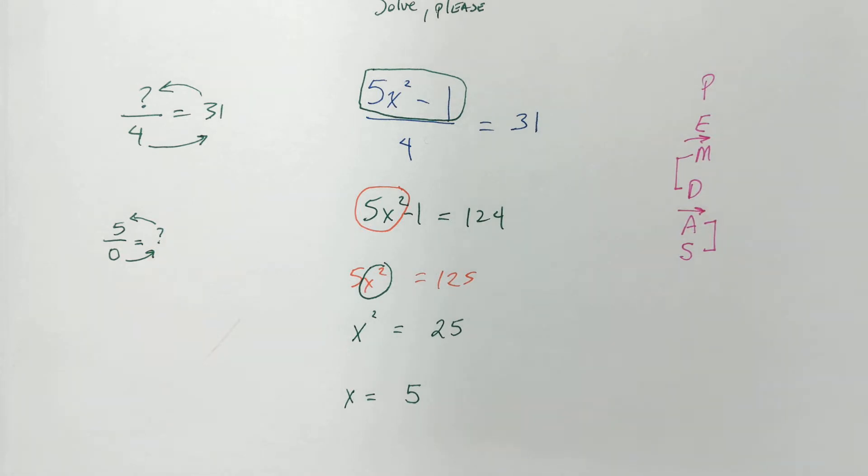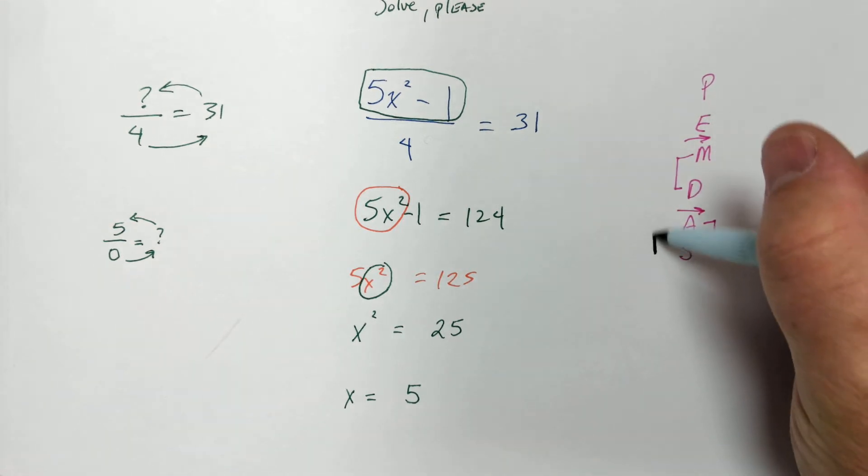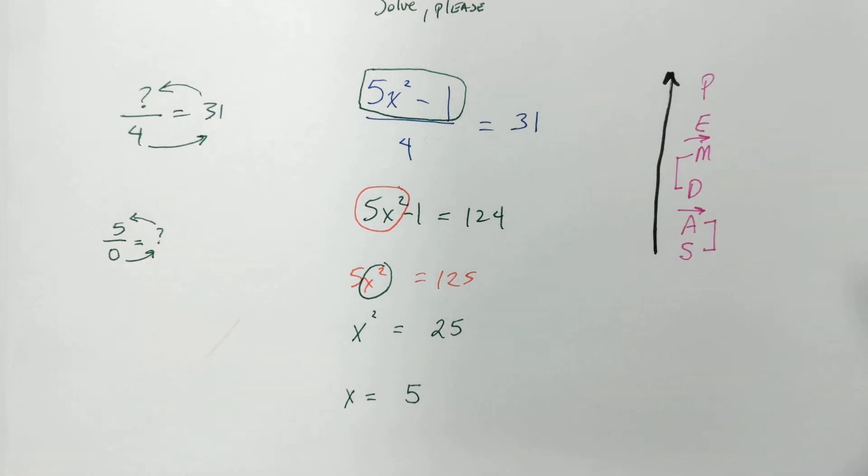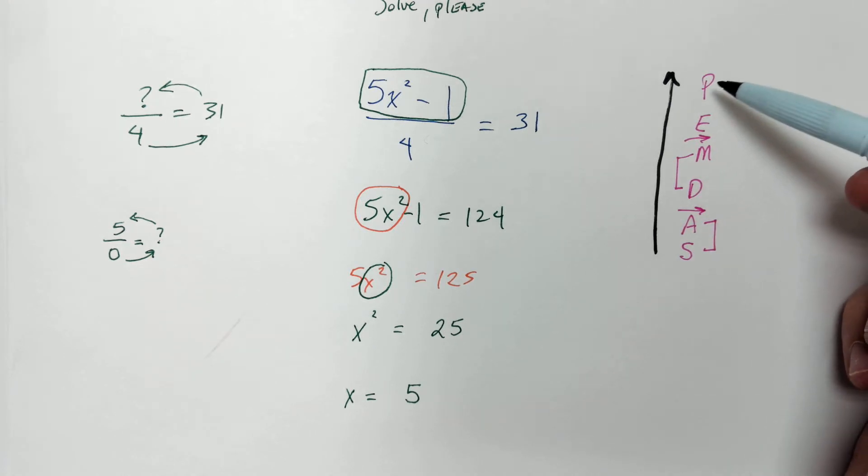But, when we're solving, we're using what's called inverse operations, which means backwards. Inverse is backwards. So, instead of doing PEMDAS, when we solve, we do SADMEP. We do everything backwards. We add and subtract first. And then we do multiplication and division. Then we do exponents. And then we do anything in a group.